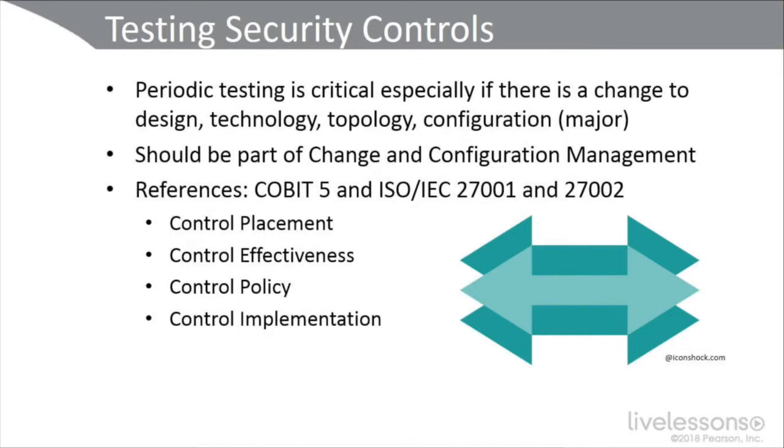There are four main control areas for testing security. First is control placement — where are the controls placed? Is it a layered defense-in-depth solution? Do you need redundancy or at least hot spares? Are they at all the zone interface points and all your ingress and egress points? And what about borderless issues? Maybe you've got cellular CAT-1M from Verizon, wireless, satellite, Bluetooth, or infrared. So think about control placement.